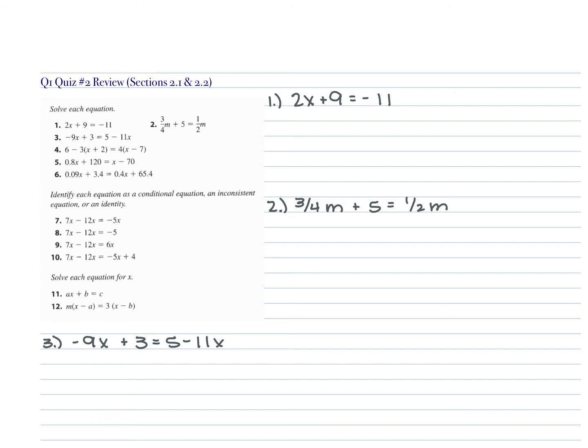We want to get X by itself, so what do we need to do? Subtract 9 from each side. So we're going to subtract 9 from itself as well as from that negative 11.